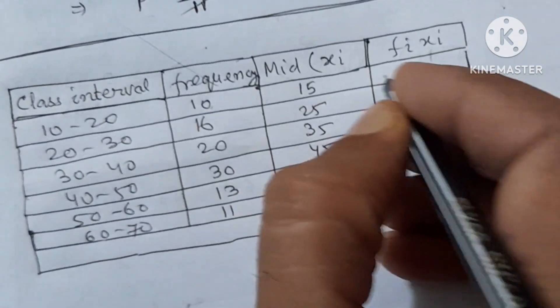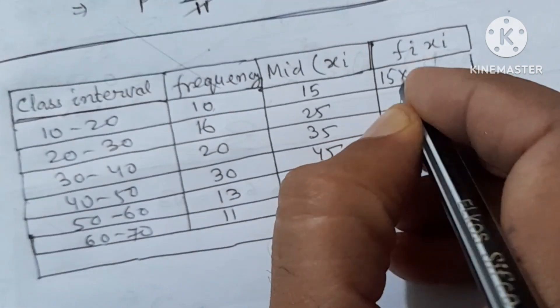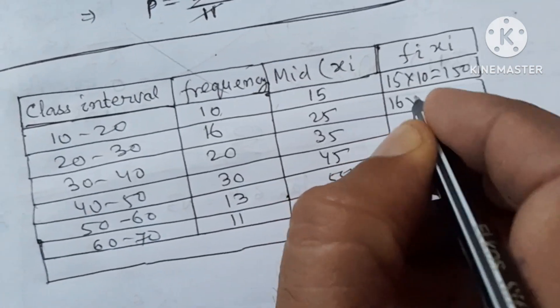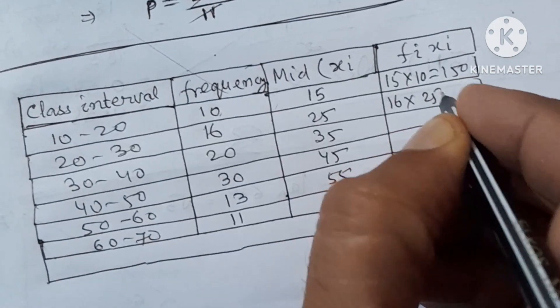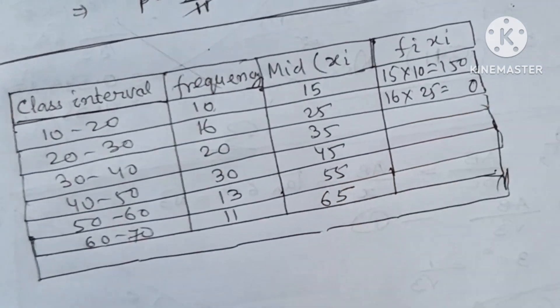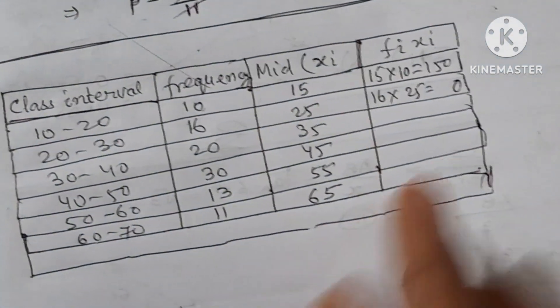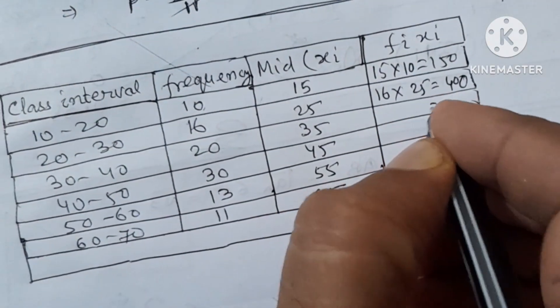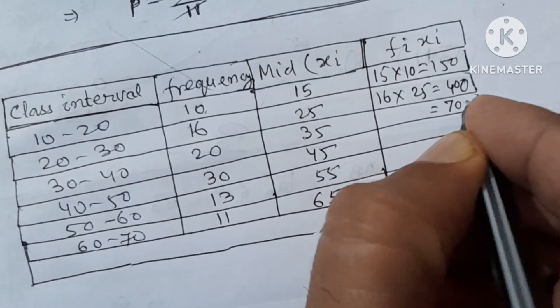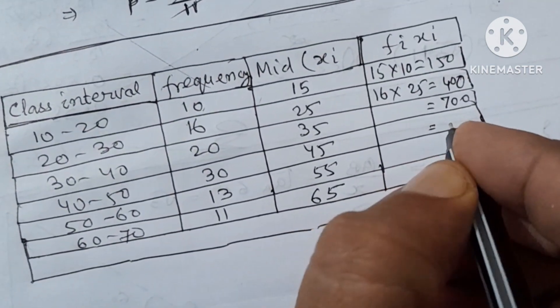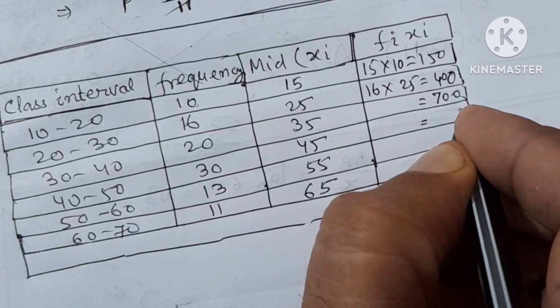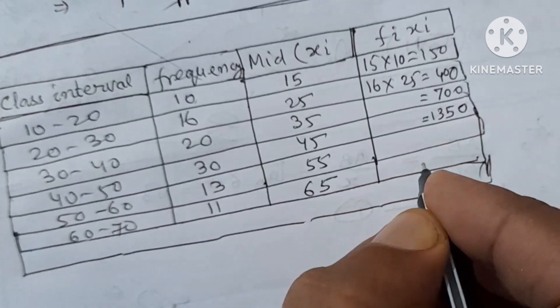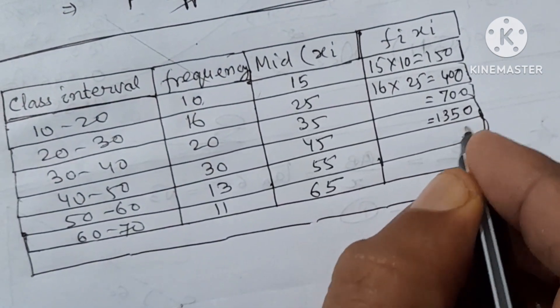Then we multiply both fi into XI. 15 into 10 is equal to 150. Similarly 16 into 25, we'll multiply it and add the value. The value is 400. Next, 35 into 20 is 700. Next, 13 into 45, we'll multiply it, it is 1350.